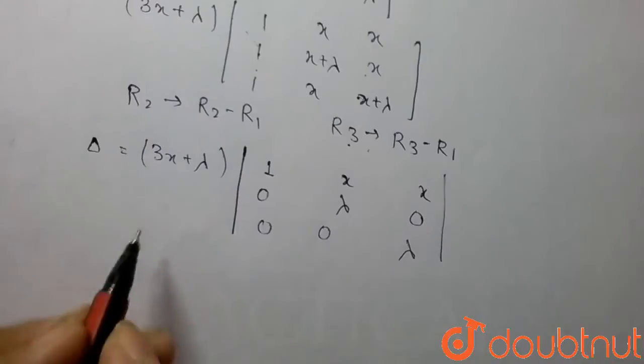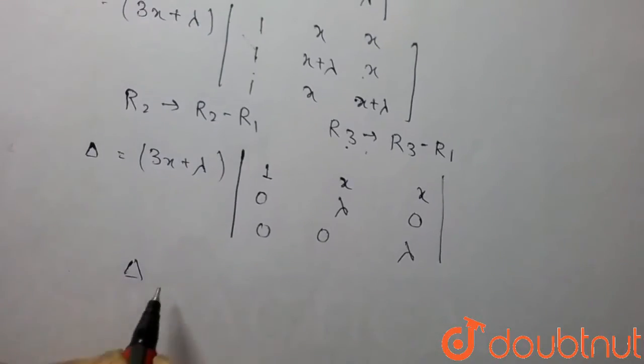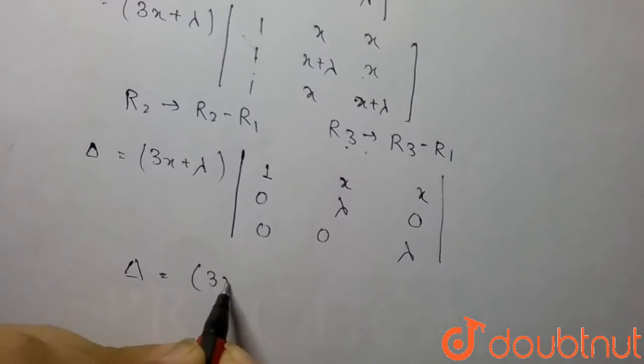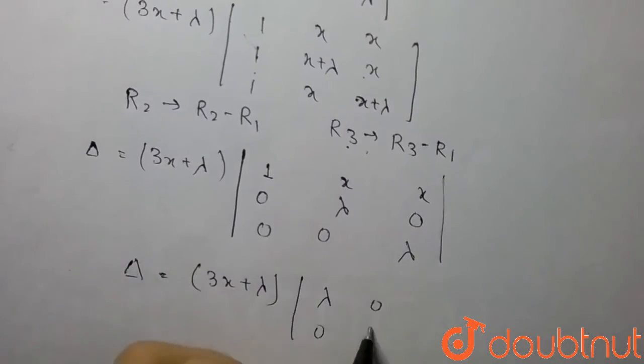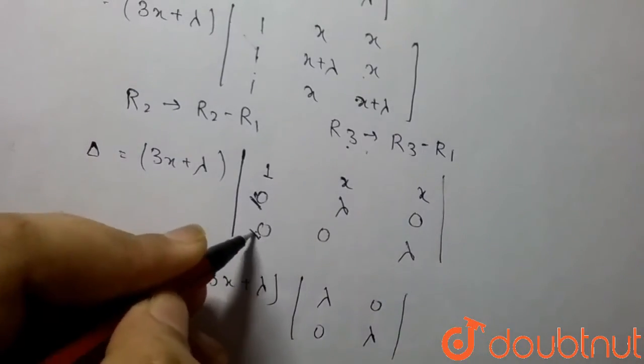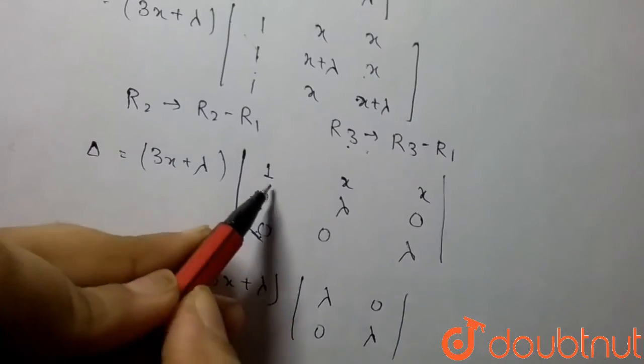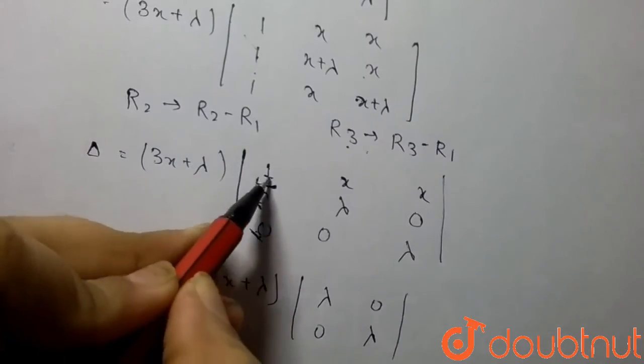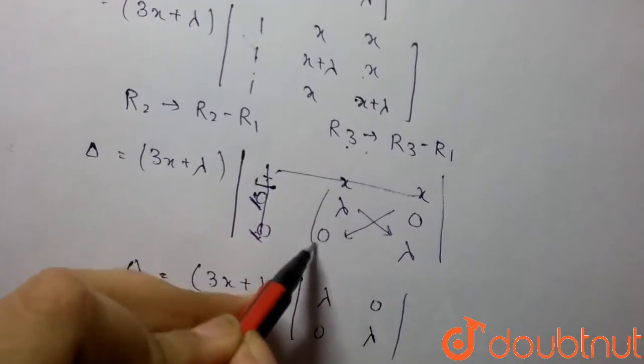If we solve it, we get 3x+λ times a determinant with λ, 0 in one row and 0, λ in another, because two values are 0. So two terms of the determinant become 0. We can leave this row and this column and multiply. So we get only this 2×2 matrix.